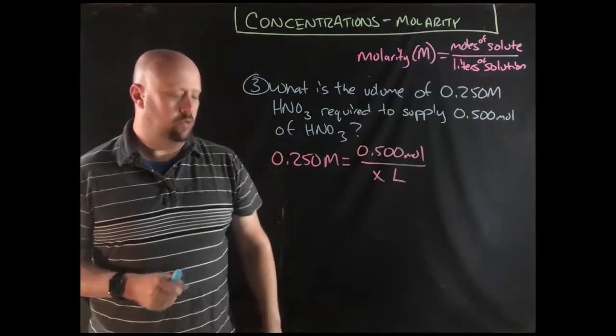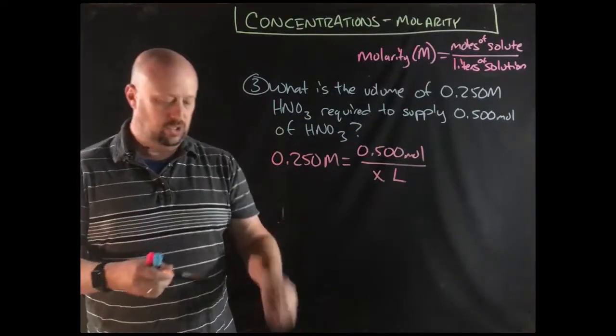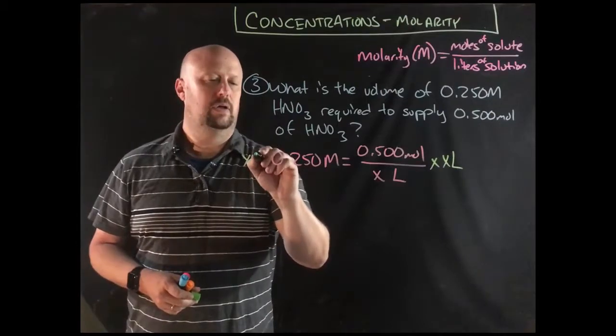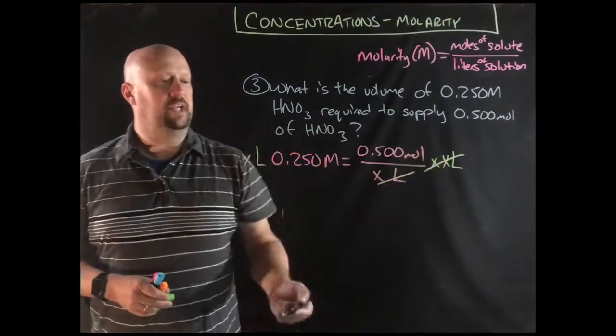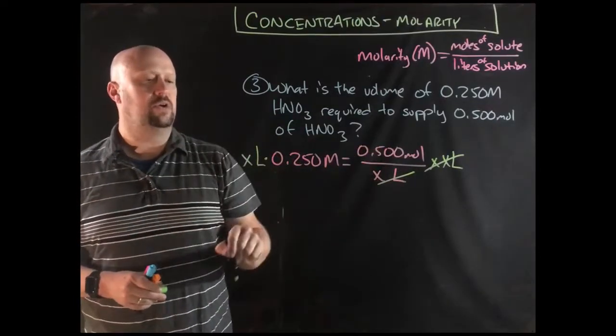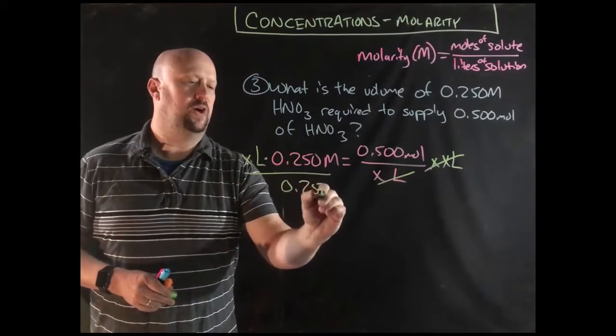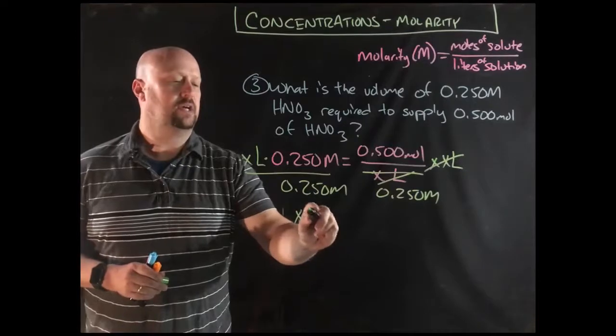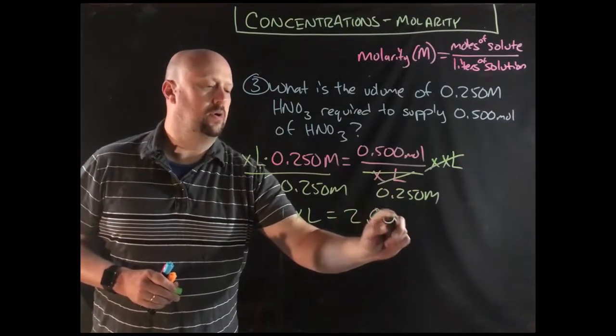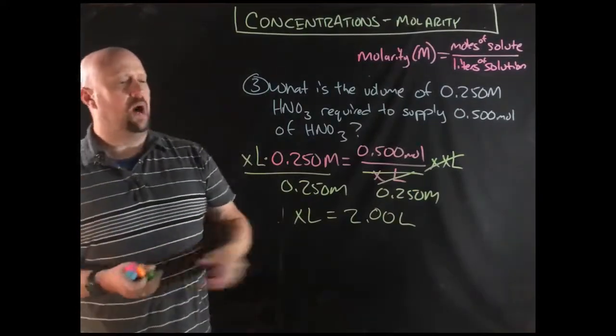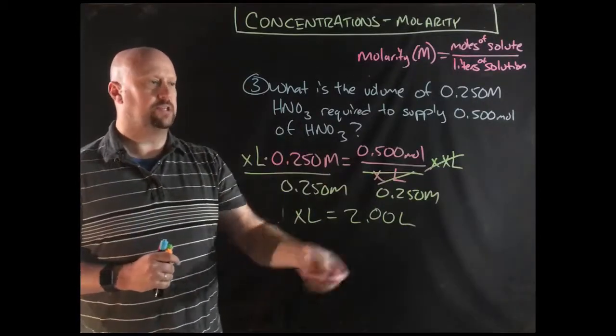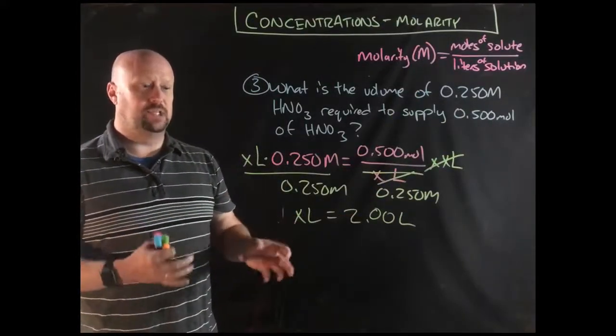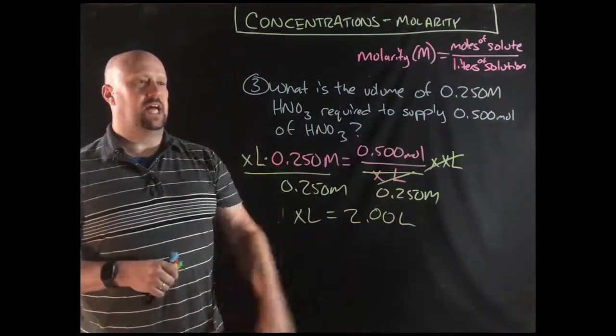Our setup here is we've got 0.250. That's my molarity. I've got my moles. I'm looking for my volume down here. The algebra here is going to be a little bit more complicated. We're going to multiply both sides by x liters. That's going to cancel that out over here. Then we're going to divide both sides by 0.250 molar. x liters is going to be 2.00 liters. You might be asking yourself again, why would you put those two zeros after that? Well, everything here had three significant figures. So, my final answer to reflect accurately the precision according to sig figs would be 2.00 liters.